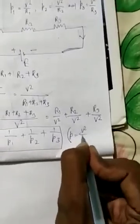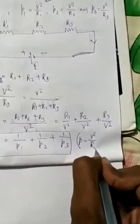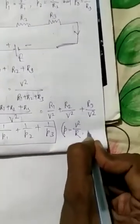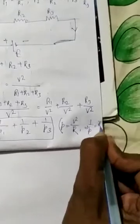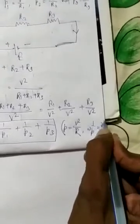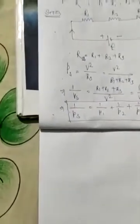In this case, P is equal to V square by R, which implies 1 by P is equal to R by V square. This is the required formula.